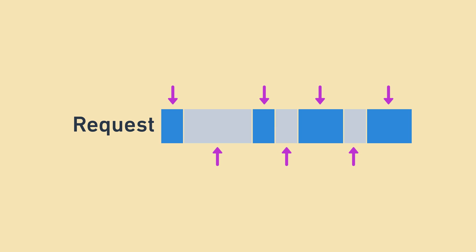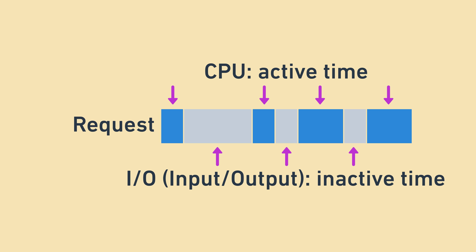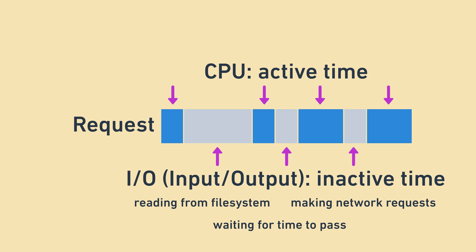All of what we've been talking about actually applies to servers and Node.js too. Just like a table only needs help part of the time, request processing also has a part that requires active attention and a part that does not. A part that requires active attention is called CPU work, because it requires the central processing unit of the computer to actively spend time thinking and computing results. A part that doesn't require active attention is called IO, which stands for input/output, because it involves waiting for something else to provide input or to send output. Examples of IO include waiting to read a file from the file system, waiting while making a network request to another server, or even just waiting for time to pass. CPU is active computing or thinking; IO is waiting for something else to happen.